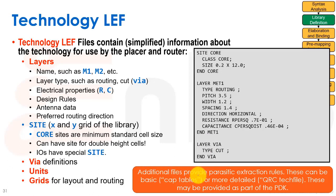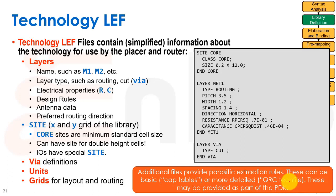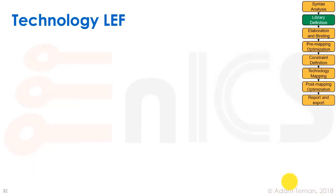An additional point is that sometimes we also need parasitic extraction rules. These can be very basic — what's known as cap tables — but that's not sufficient for today's technologies. More detailed options include binary files such as Cadence's Quantus QRC tech file. These have to be provided to help us do parasitic extraction, and they're part of the technology LEF.